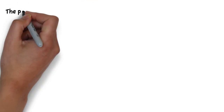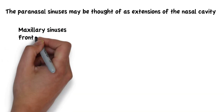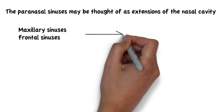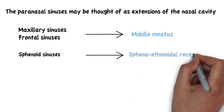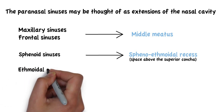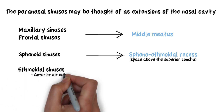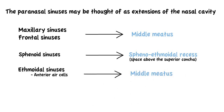The paranasal sinuses may be thought of as extensions of the nasal cavity, as they have openings that connect to the nasal cavity. The maxillary sinuses and the frontal sinuses drain into the middle meatus. The sphenoid sinuses drain into the sphenoethmoidal recess, which is the space above the superior concha. As for the ethmoidal sinuses, the anterior air cells drain into the middle meatus, while the posterior air cells drain into the superior meatus.